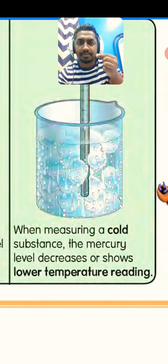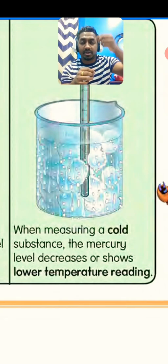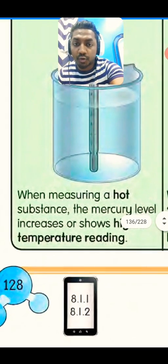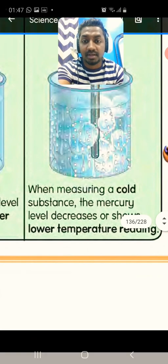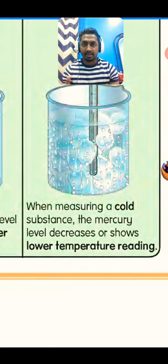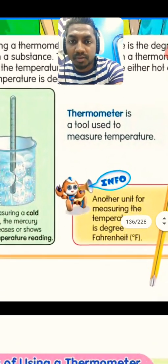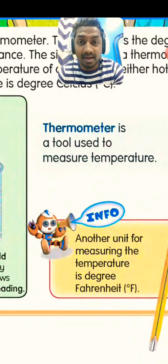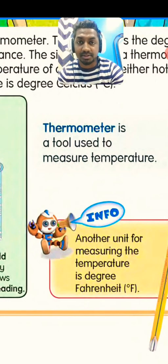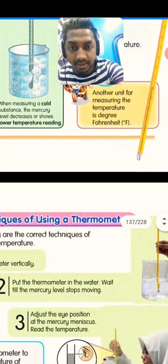So to summarize: if you put the thermometer in a hot substance, it shows a high temperature reading; if you put it in a cold substance, it shows a low temperature reading. That's the difference between hot and cold substances. A thermometer is a tool to measure temperature — we can't see temperature, but we can measure it using a thermometer.